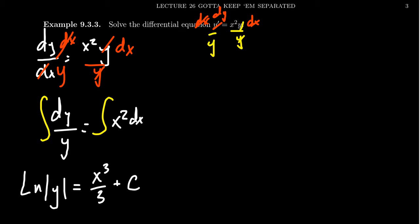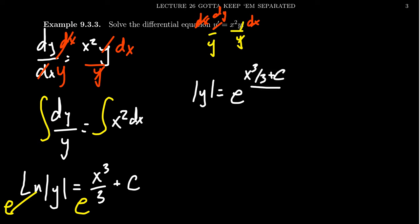To get rid of the natural log on the left-hand side, we take its inverse function — we exponentiate with base e. This gives us the absolute value of y equals e to the quantity x cubed over 3 plus c. To handle the absolute value — since it is not one-to-one and forgets the sign — we must consider both cases, taking positive and negative. So we get y equals plus or minus e to the x cubed over 3 plus c. We can rewrite this in a simpler form.